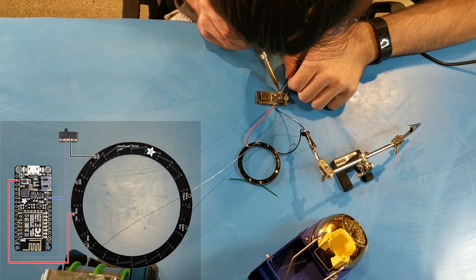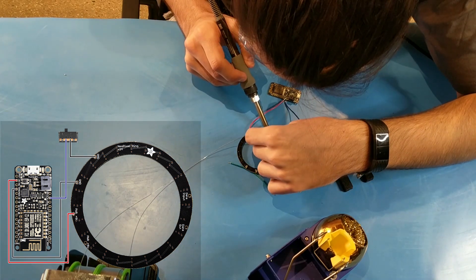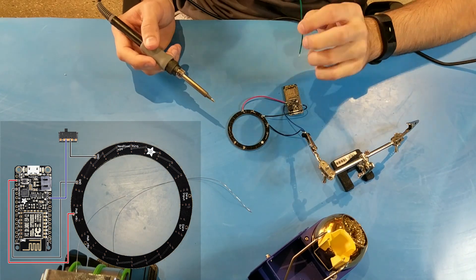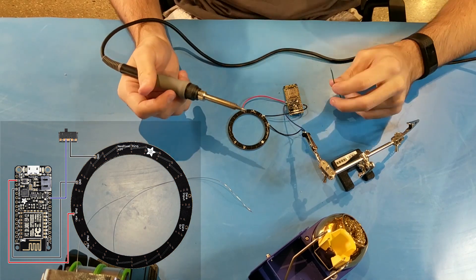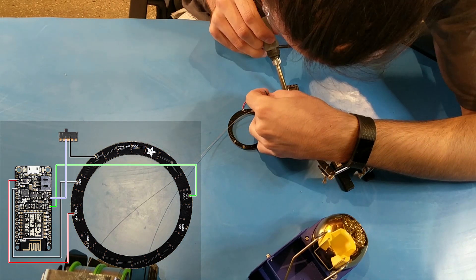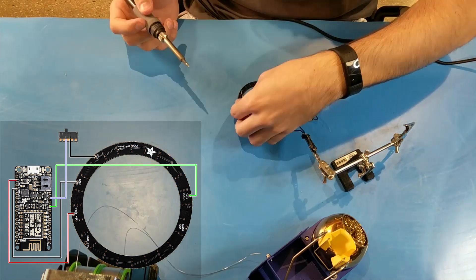Next, we are going to add a ground wire from the feather to the Neopixel ring. The last wire that we need is the data input to the Neopixel ring. The feather tells the Neopixel ring what LEDs to light up. We will be using pin 14.